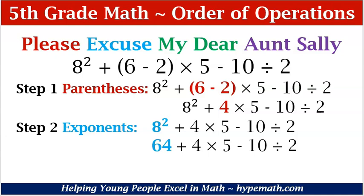Let's look at a larger expression. But remember, even though it looks big, you can eat an elephant one bite at a time. It's 8 squared plus, in parentheses, 6 minus 2, times 5 minus 10 divided by 2. Based on PEMDAS, we know that we are going to focus on our parentheses first. 6 minus 2 is equal to 4. Next, we know that we need to address our exponents. 8 squared, or 8 to the second power, or 8 times 8 — they're all the same — is equal to 64.